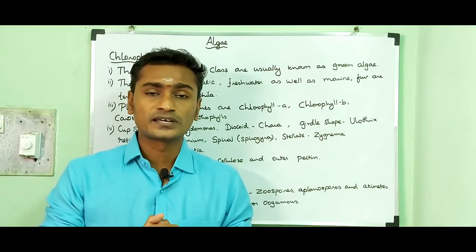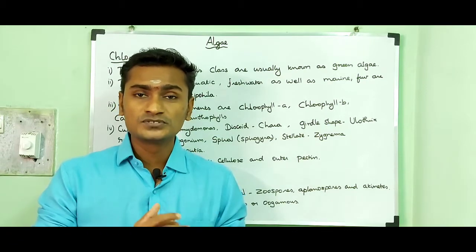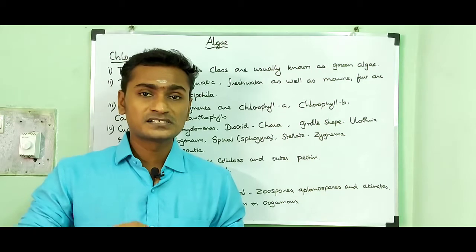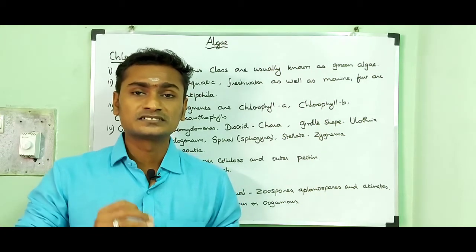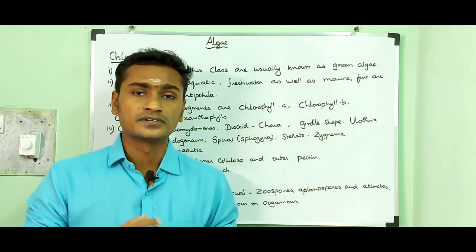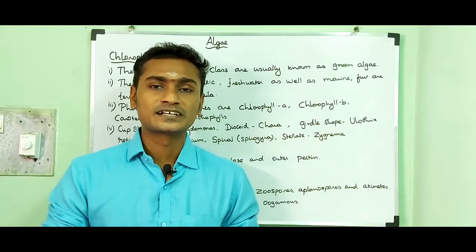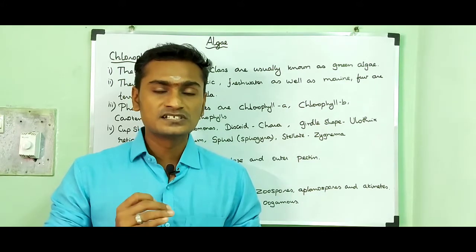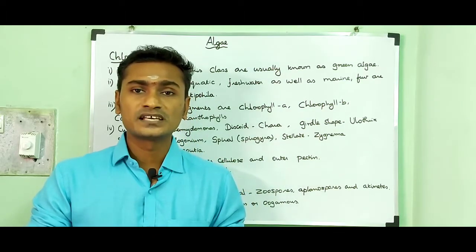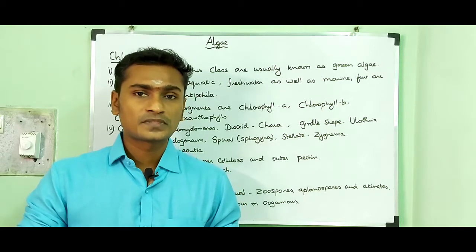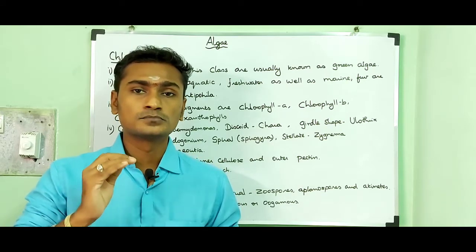F.E. Fritsch classified the algae mainly based on pigmentation, reproduction, mode of nutrition and thallus structure. He published his classification in the book entitled 'The Structure and Reproduction of the Algae' in the year 1935. He classified the algae into eleven classes: Chlorophyceae, Bacillariophyta, Xanthophyta, Euglenophyta, Cyanophyceae, Rhodophyceae, Phaeophyceae, Chrysophyceae, Cryptophyta, Xanthophyte and Chloromonadinae.